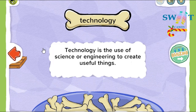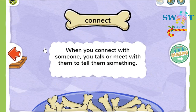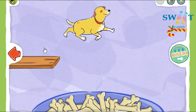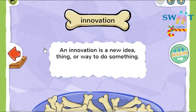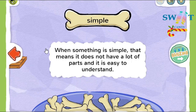Technology is the use of science or engineering to create useful things. When you connect with someone, you talk or meet with them to tell them something. An innovation is a new idea, thing, or way to do something. When something is simple, that means it does not have a lot of parts and it's easy to understand.